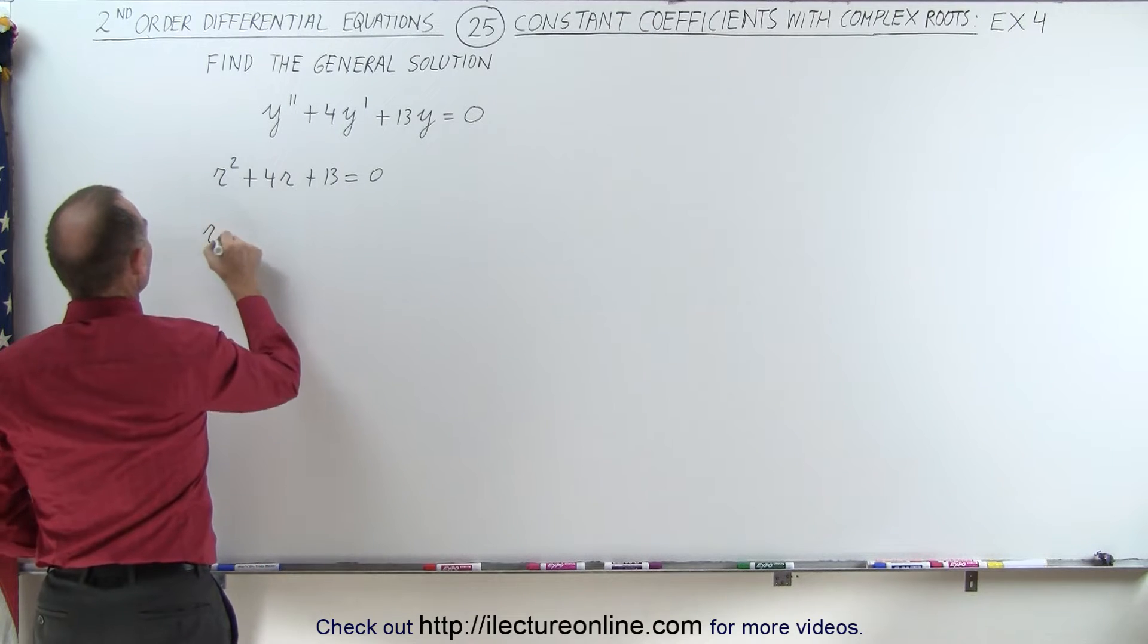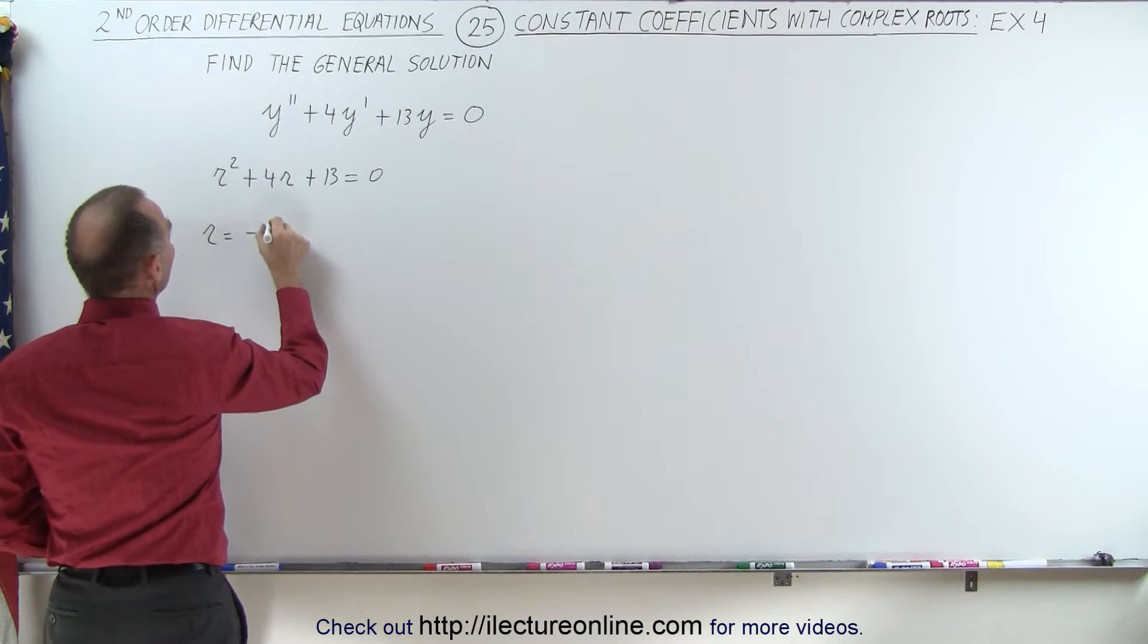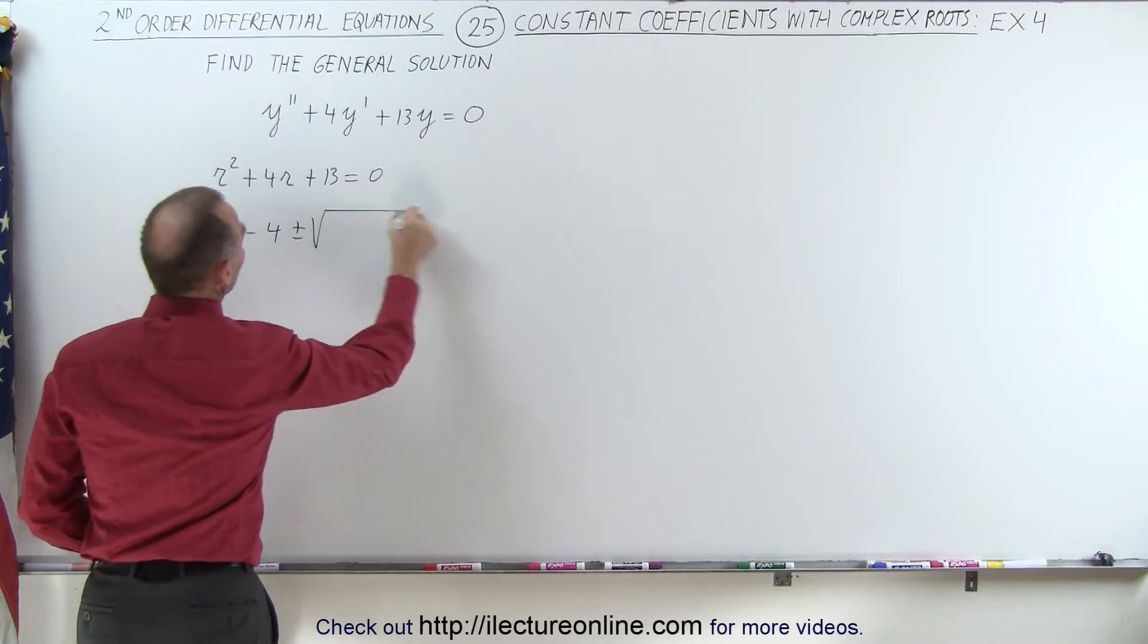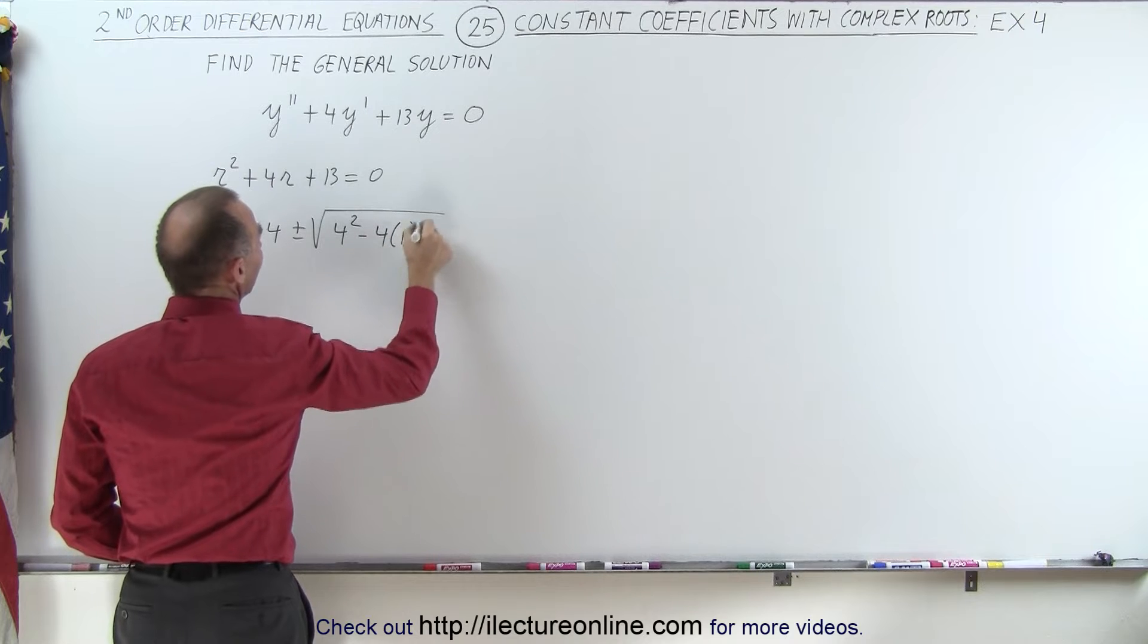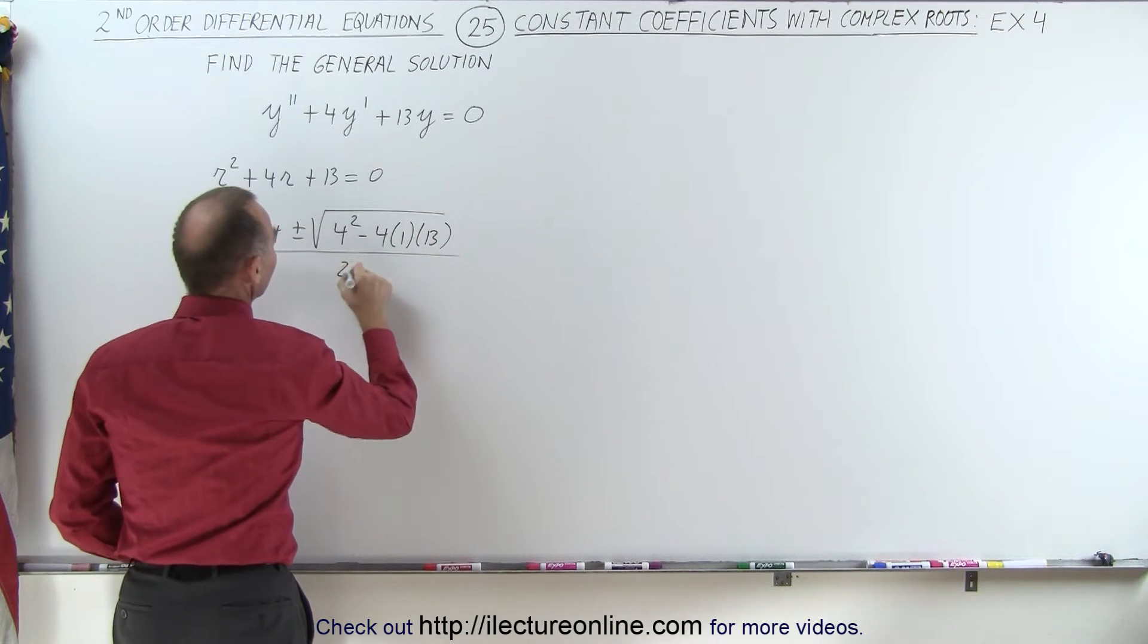Notice that r is going to be equal to minus b, which is minus 4, plus and minus the square root of 4 squared minus 4 times a times c, all divided by 2 times a.